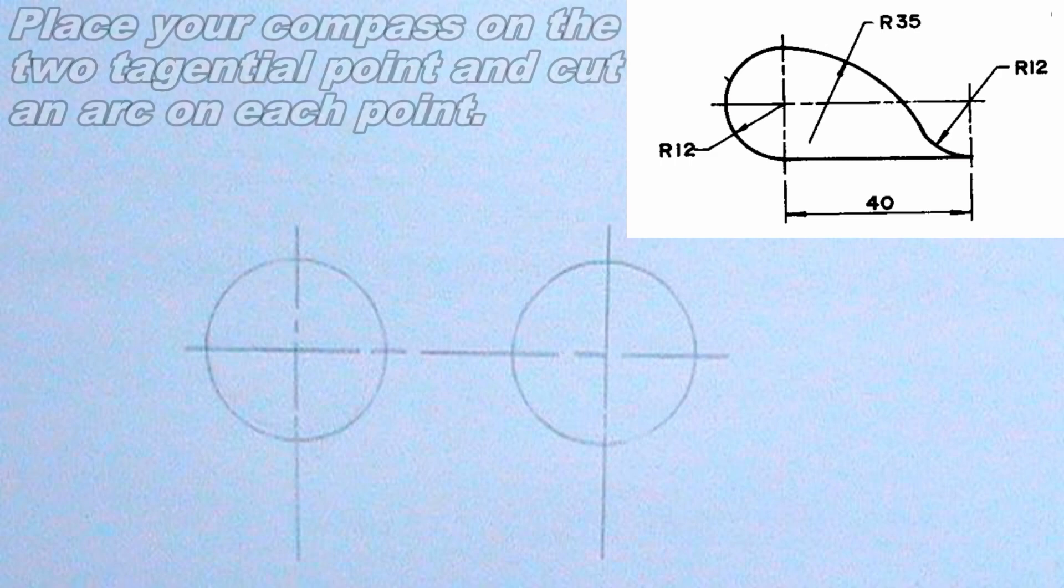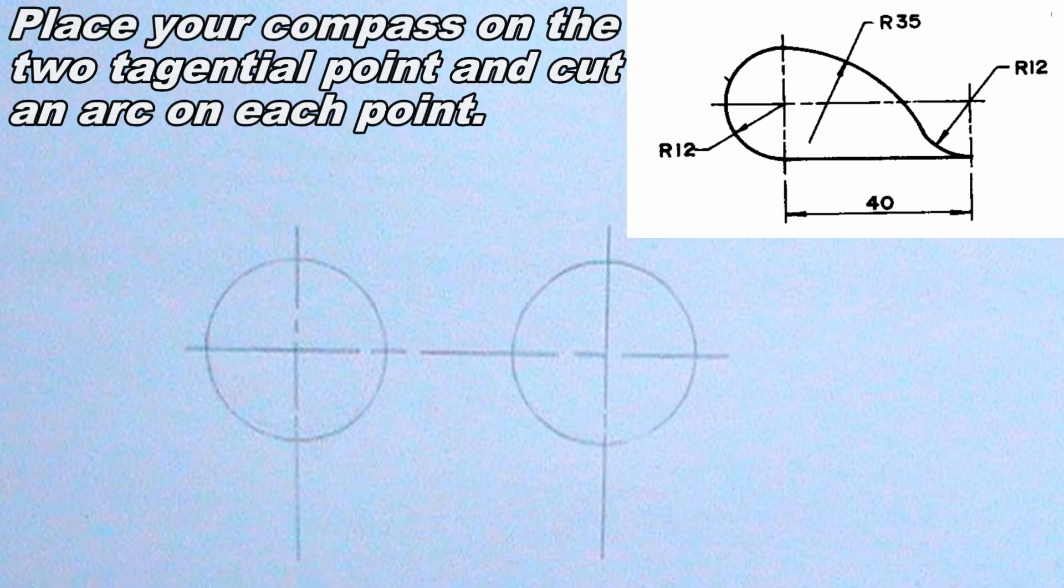Now it is time to produce the tangential arc. I will do so by placing my compass on the two tangential points, cutting an arc on each point. The radius of the arcs should be 35 millimeters. The arcs should meet at a point.